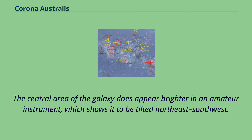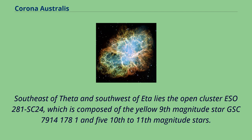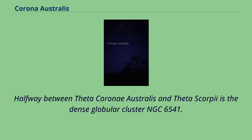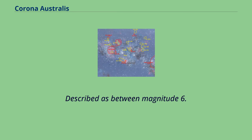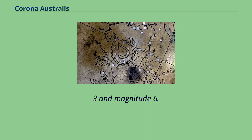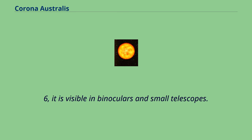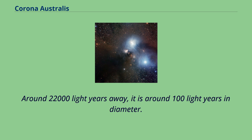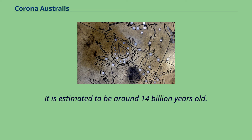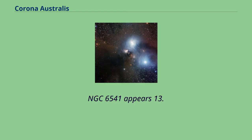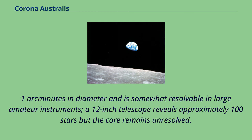Southeast of Theta and southwest of Eta lies the open cluster ESO 281 SC24, which is composed of a yellow 9th magnitude star GSC 7914-1781 and 5 tenth to 11th magnitude stars. Halfway between Theta Coroni Australis and Theta Scorpii is the dense globular cluster NGC 6541. Described as between magnitude 6.3 and 6.6, it is visible in binoculars and small telescopes. Around 22,000 light-years away, it is around 100 light-years in diameter, estimated to be around 14 billion years old. NGC 6541 appears 13.1 arcminutes in diameter; a 12-inch telescope reveals approximately 100 stars but the core remains unresolved.